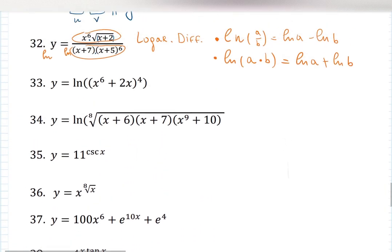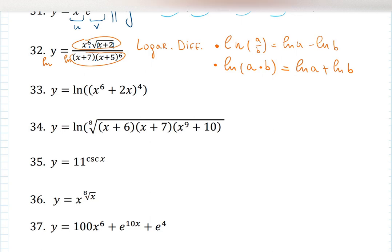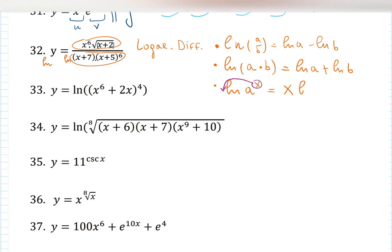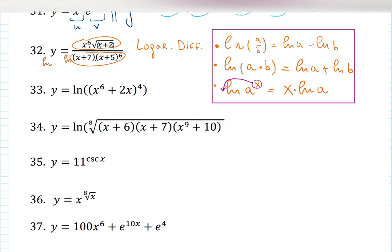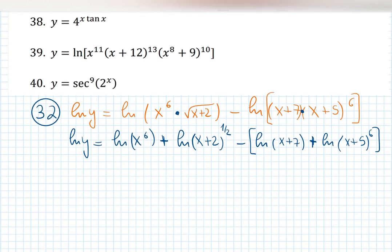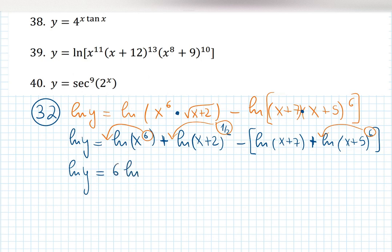There's one more property: if I'm working with ln of a to the x, then x can jump down as a multiplier, giving a product of x times the log. These properties you must know — they save you from long differentiation. So I'm going to bring the 6 down, bring the one-half down, and bring the other 6 down. ln(y) becomes 6·ln(x) — and you can see that 6·ln(x) is much easier to differentiate than ln(x to the 6).